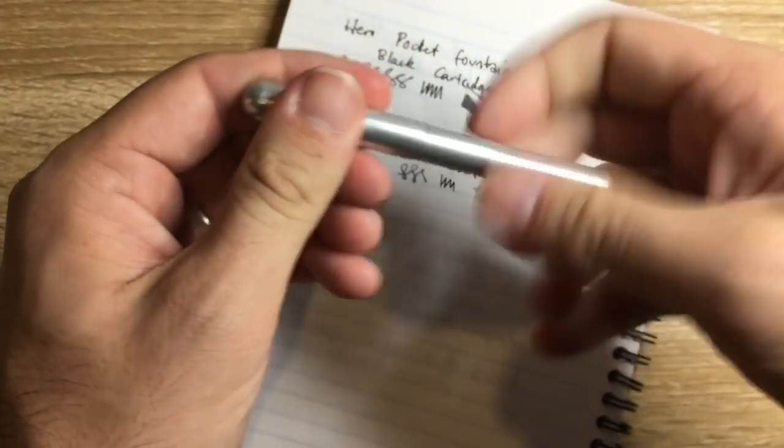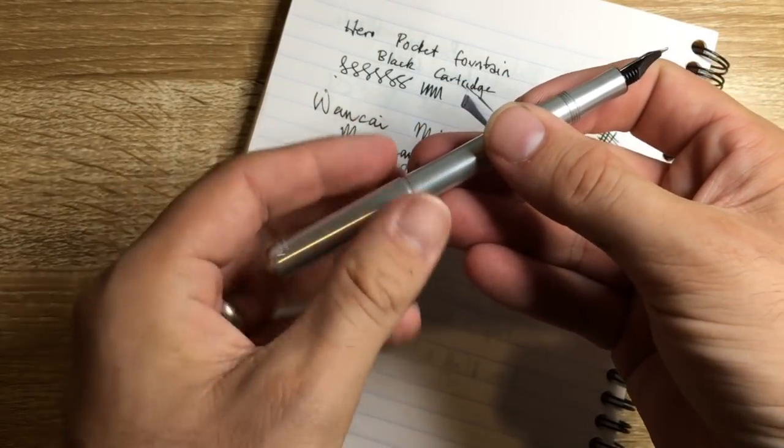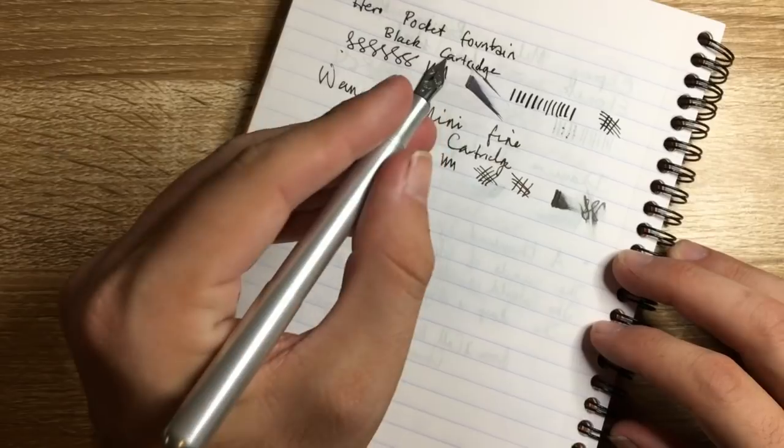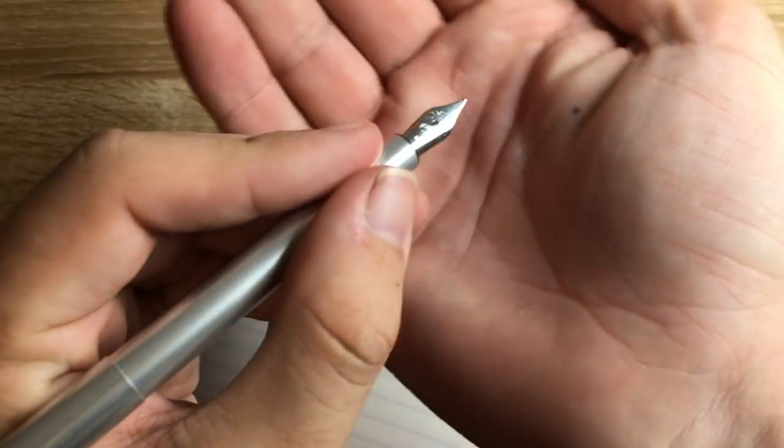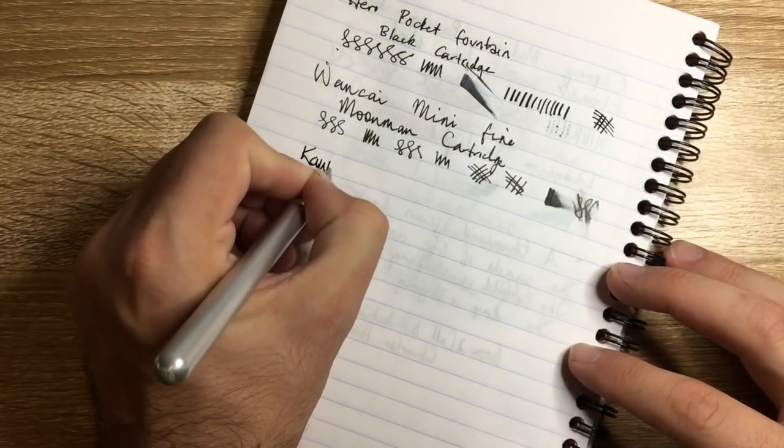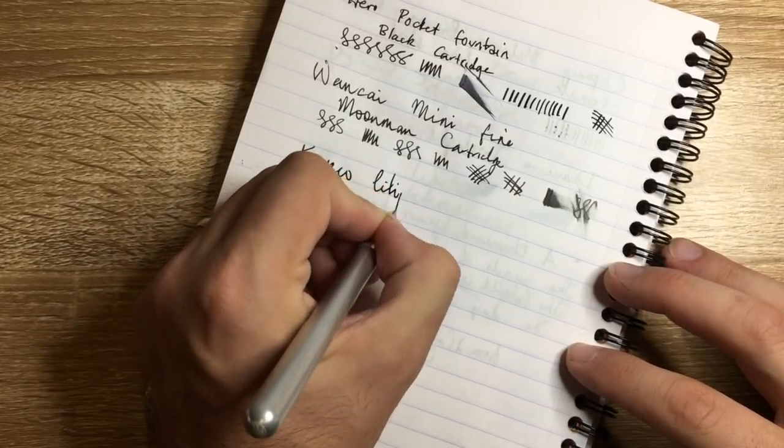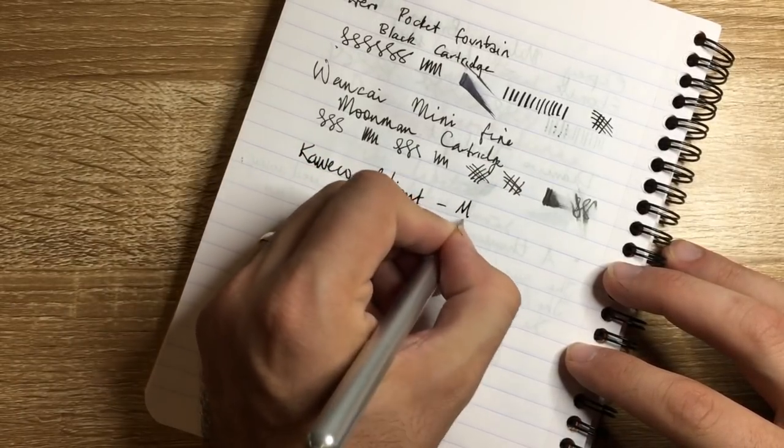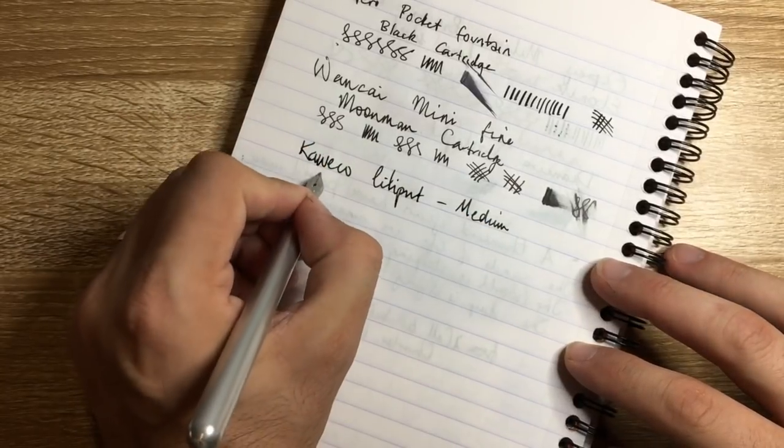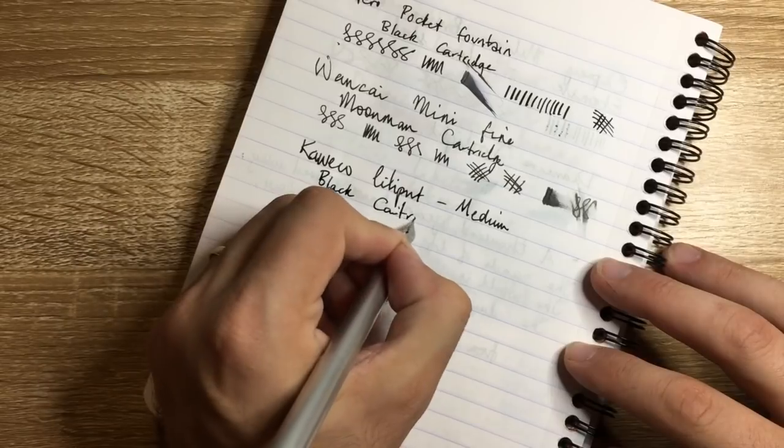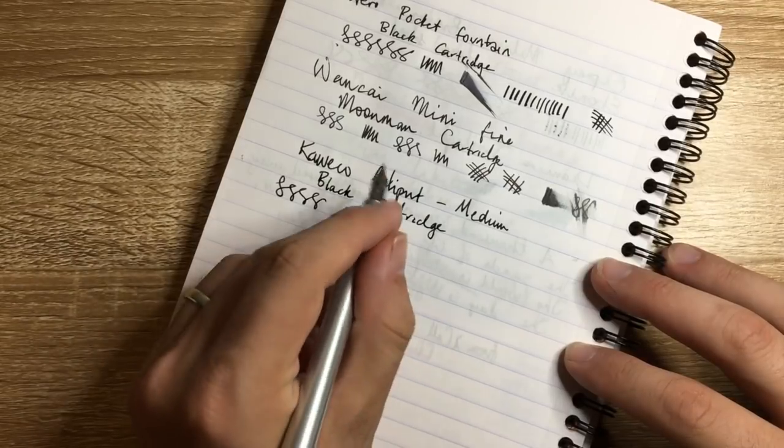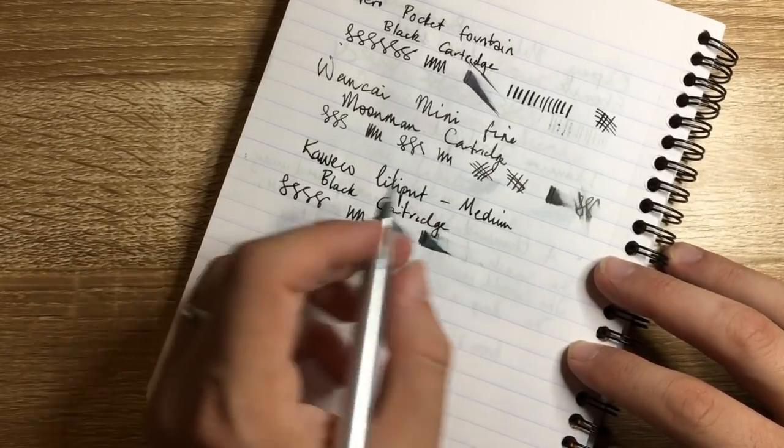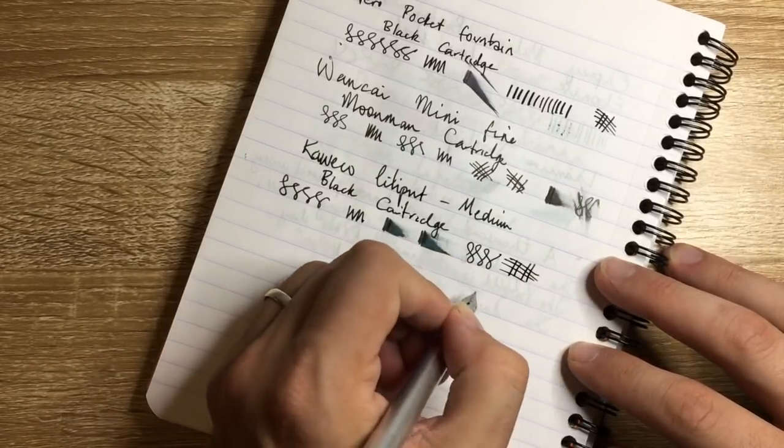So then we have the Kaweco Lilliput, which is one of the smallest pens, as I said, and certainly one of the smallest pens I own. But when it's posted, it's actually not so bad. It's a bit narrow. A lot of these pens are slim by nature of the build. But it does have the nice Kaweco steel nib, and I have a medium on it here. So yeah, it's just really nice. The Kaweco Lilliput, this is a medium with a generic black cartridge. This is smooth. And it's really quite wet.